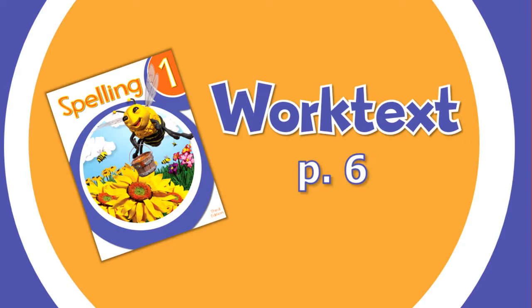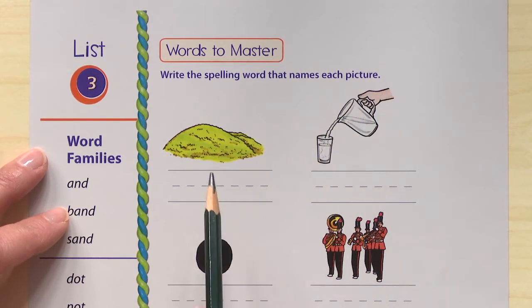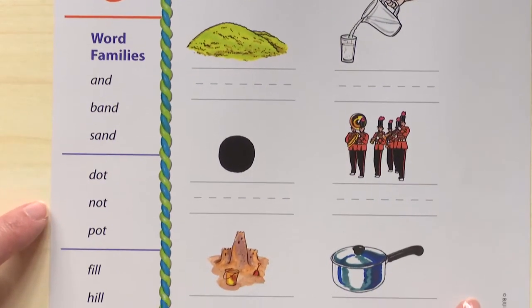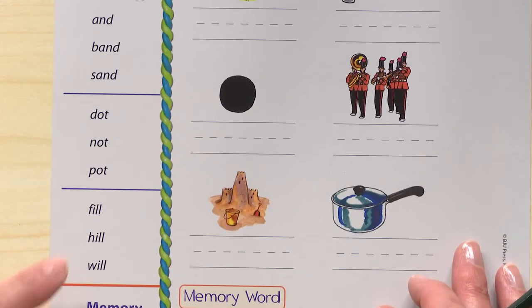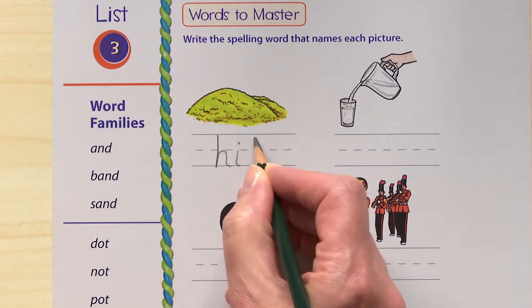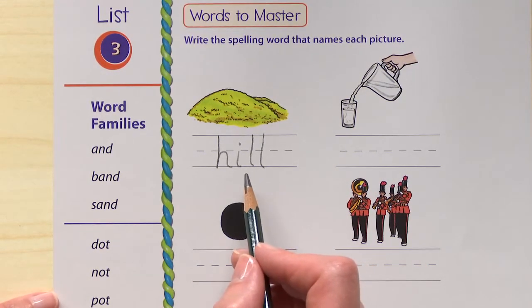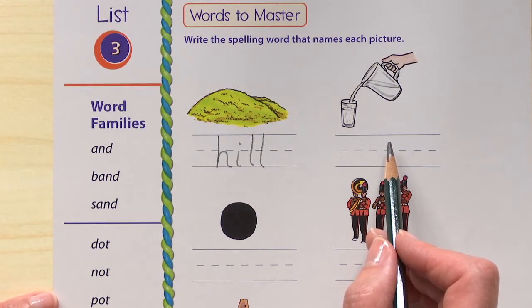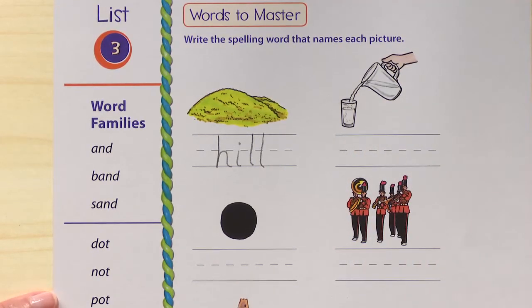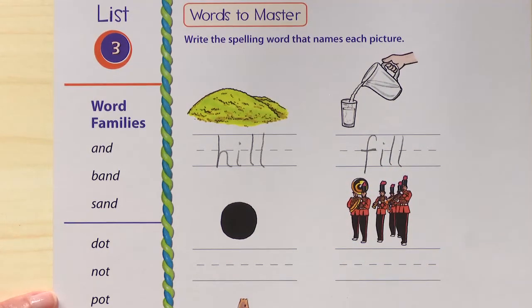Now let's take a look at your WorkText page. You should have page 6 out in front of you, and you'll also need a pencil. The directions say: write the spelling word that names each picture. This is a picture of a hill, so write 'hill' in the blank — H-I-L-L. Remember, we need two L's. When you hear the L sound at the end of a one-syllable word, it's usually spelled with two L's. What about this picture? Fill — F-I-L-L.